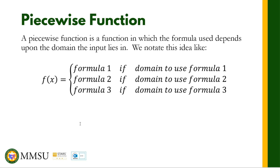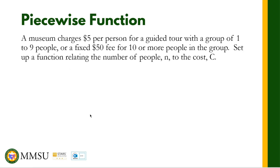Let us have an example of how we come up with a piecewise function from a given problem. A museum charges $5 per person for a guided tour with a group of 1 to 9 people, or a fixed $50 fee for 10 or more people in the group. We need to set up a function relating the number of people n to the cost c.